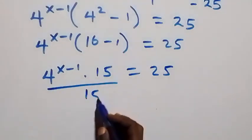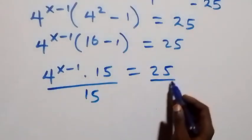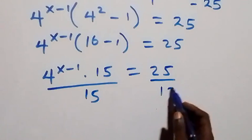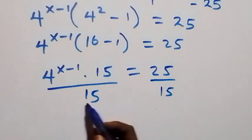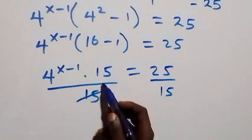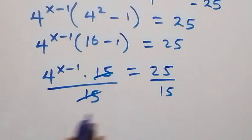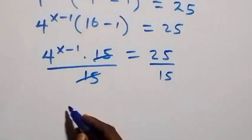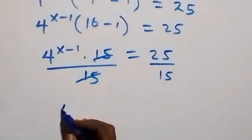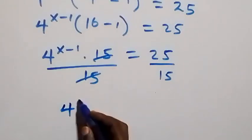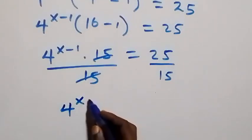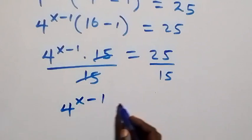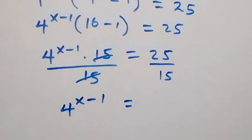We divide both sides by 15 — divide this side by 15 and also this side by 15 — such that 15 cancels, and we are left with four raised to power x minus one equals to 25 over 15.